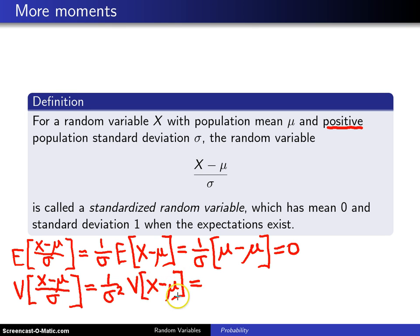You know that adding or subtracting a constant from a random variable does not affect its variance, that's from the earlier result concerning the variance of ax plus b, so this will become 1 over sigma squared times the variance of x. But because sigma squared is the same as the variance of x, this is nothing more than 1.